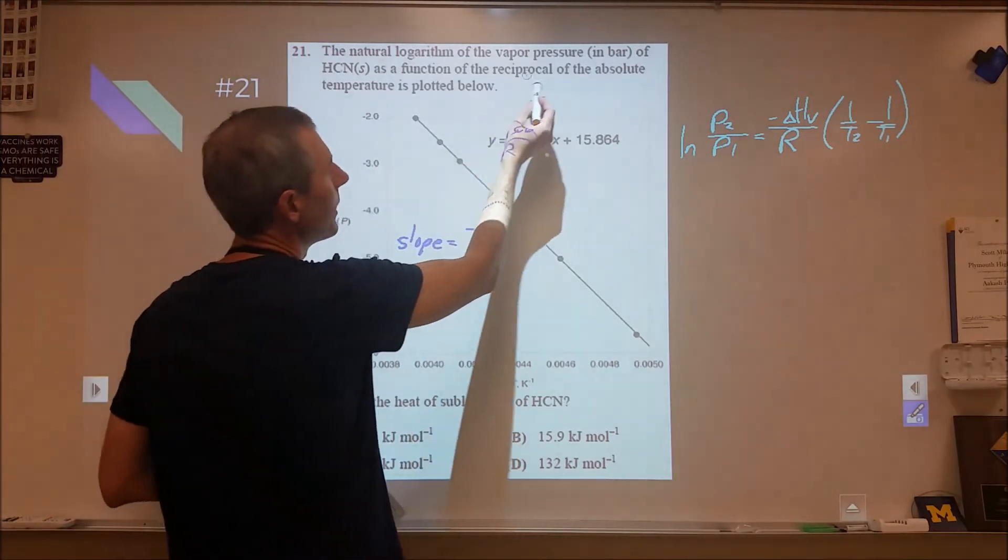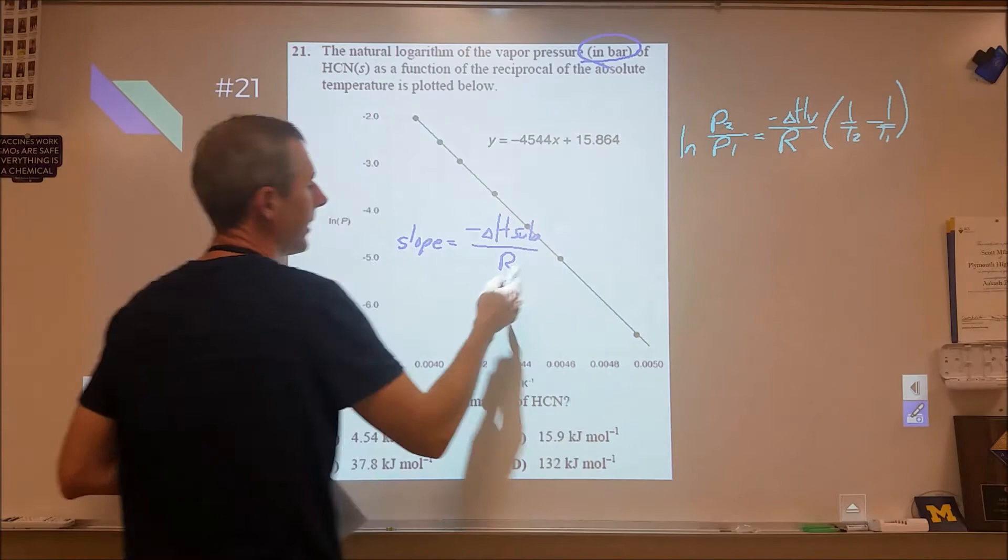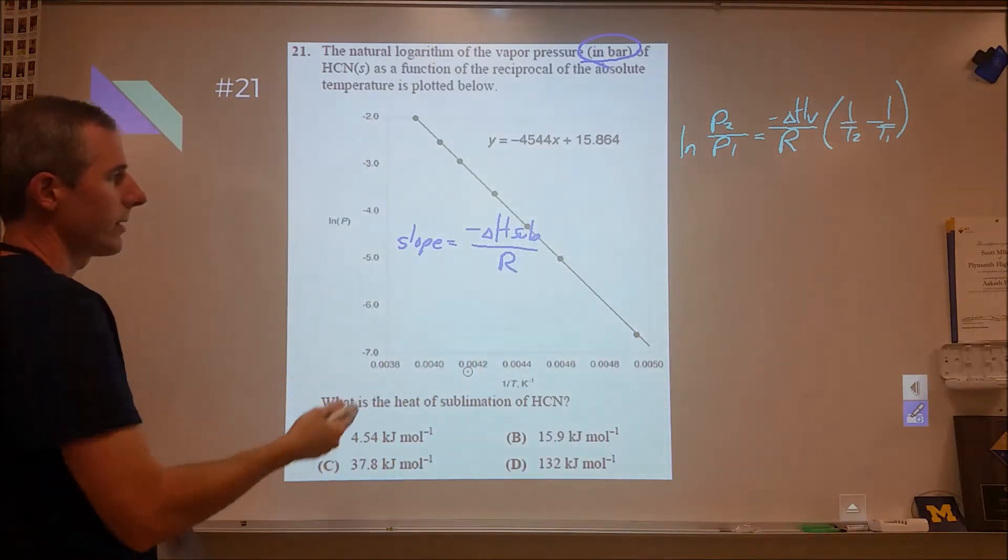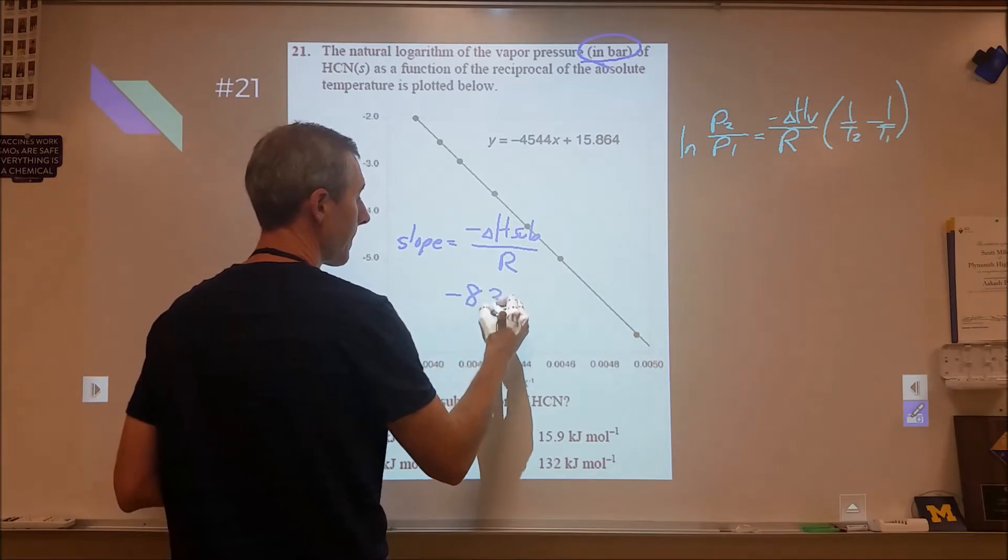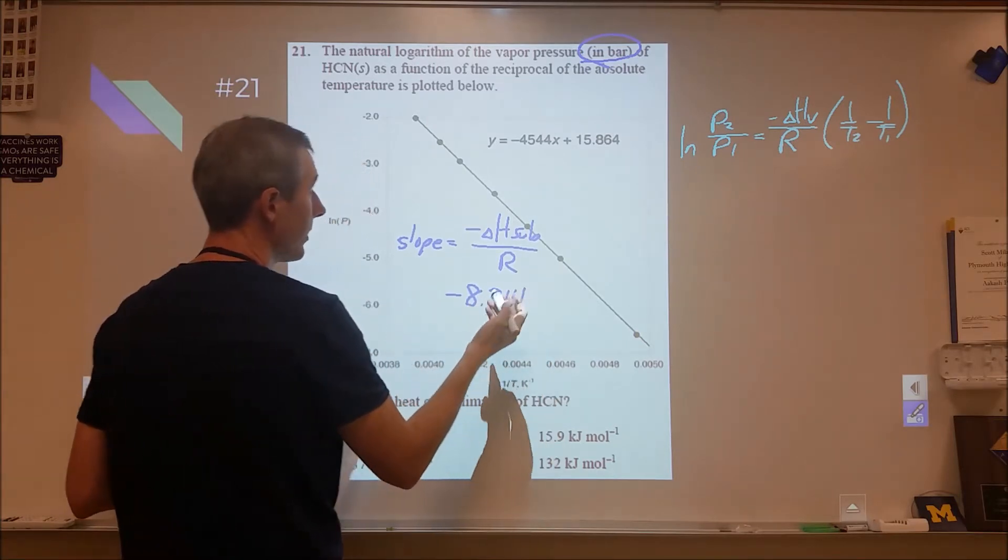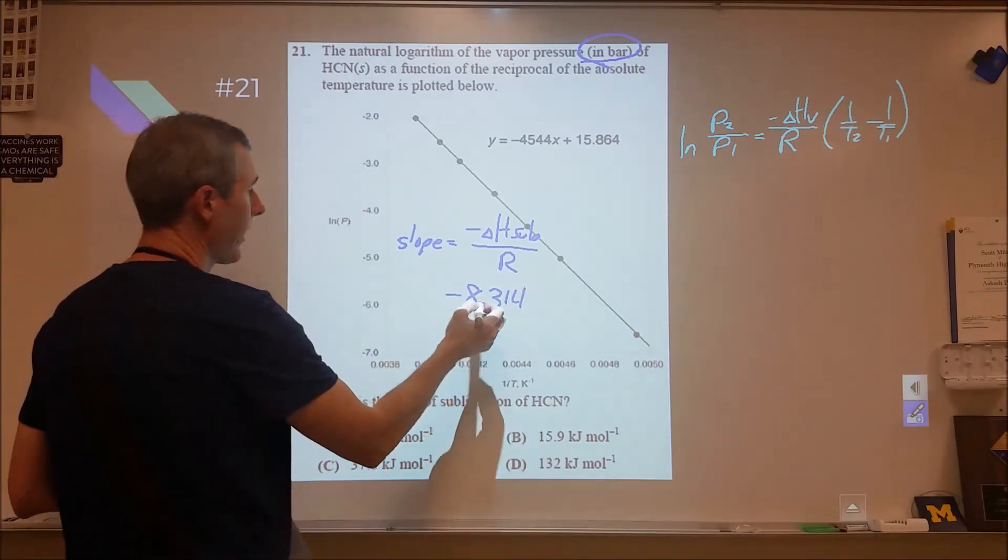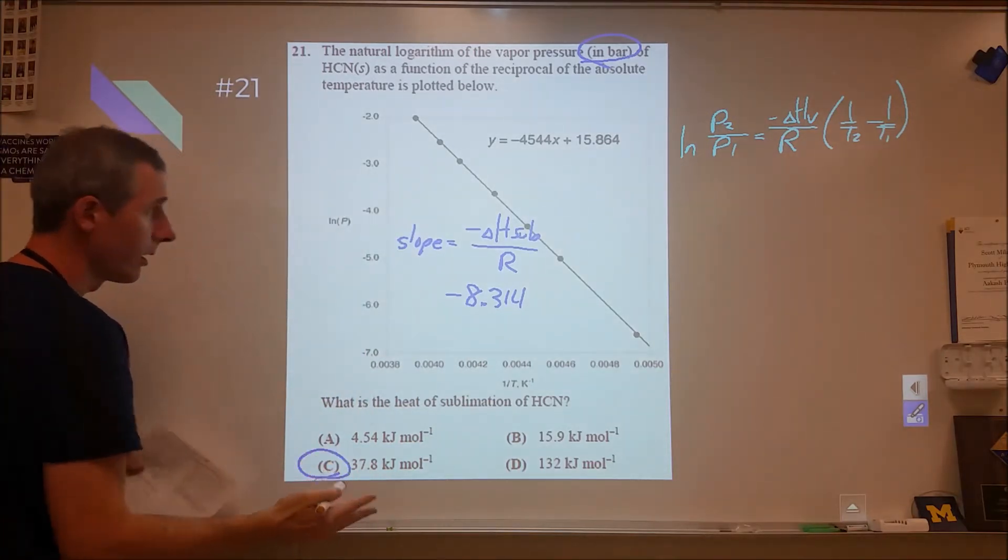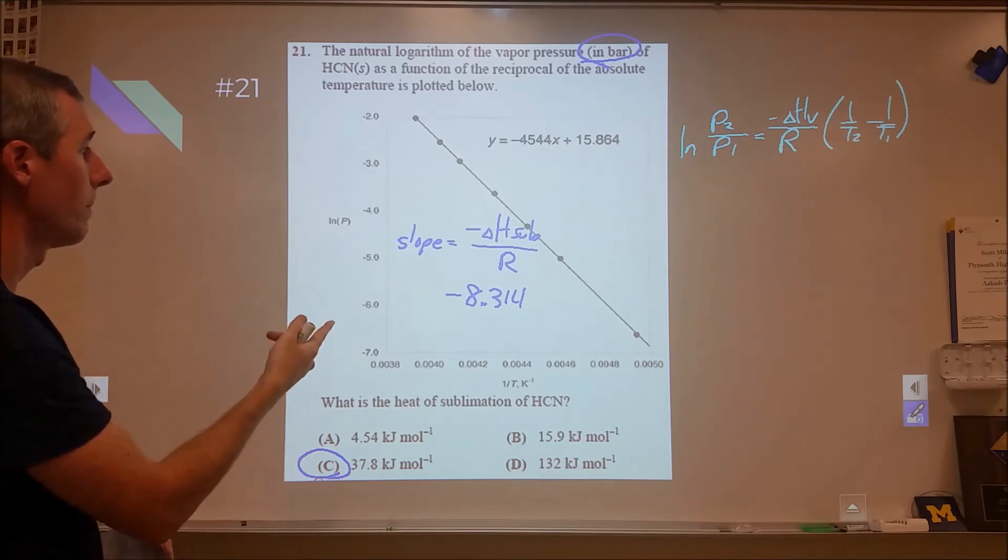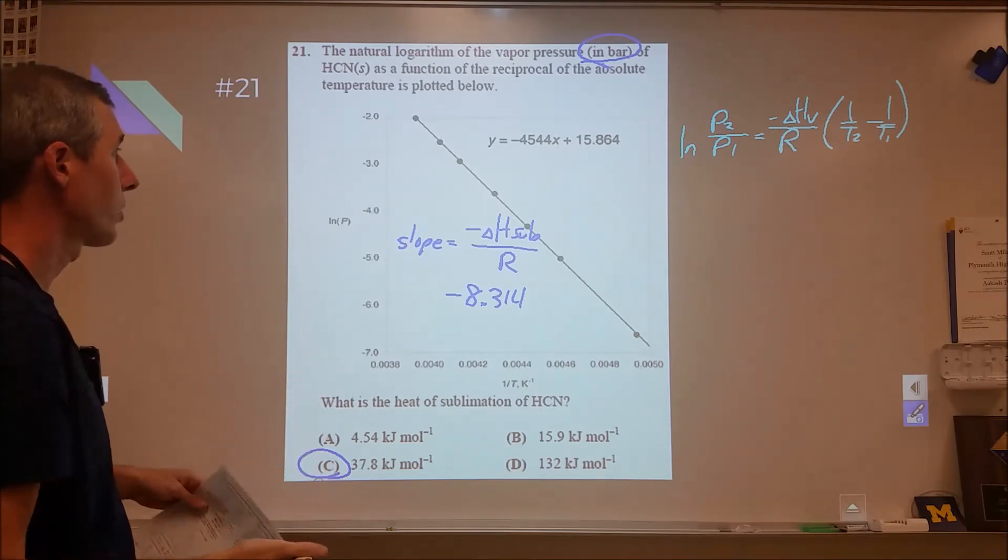However, it says the vapor pressure is in bar, and the ideal gas constant 8.314 that I used is in kilopascals, not bars. So I don't know how that translation works out in terms of the natural log. I ended up getting answer C and just moved on with my life, and that ended up being marked correct.